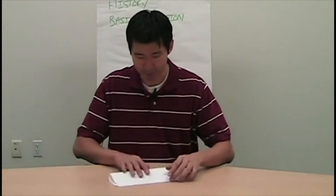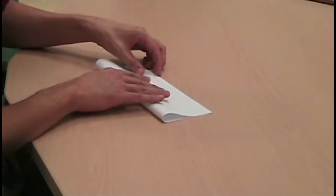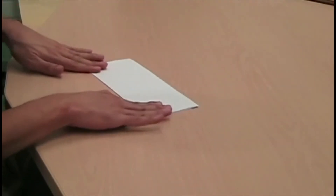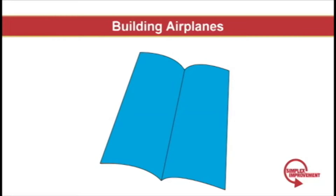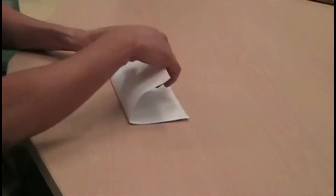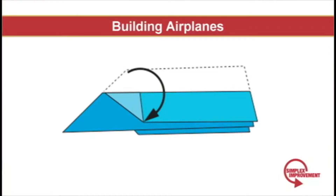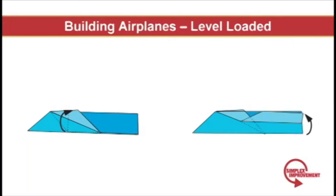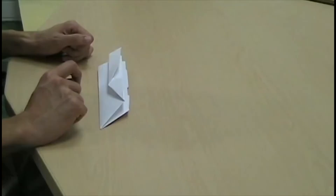Before we get started with the simulation, I'm going to demonstrate how to build this paper airplane. Really simple. First thing you do is make a fold down the middle. Then you fold the nose piece. Then you fold the wings. Then you fold the tips — just two folds on each side. And that's it.